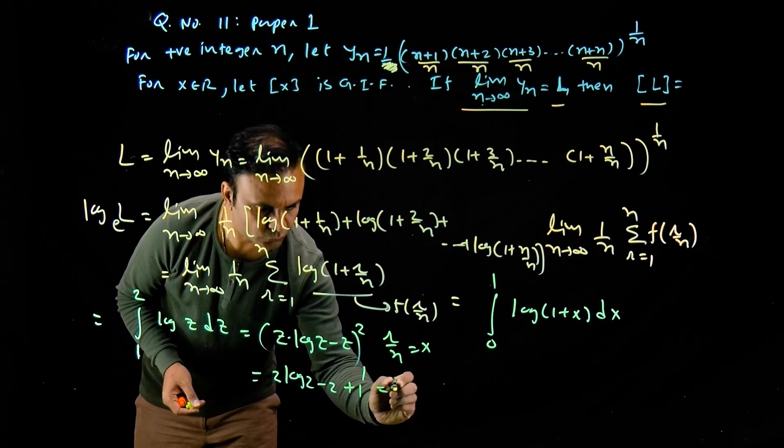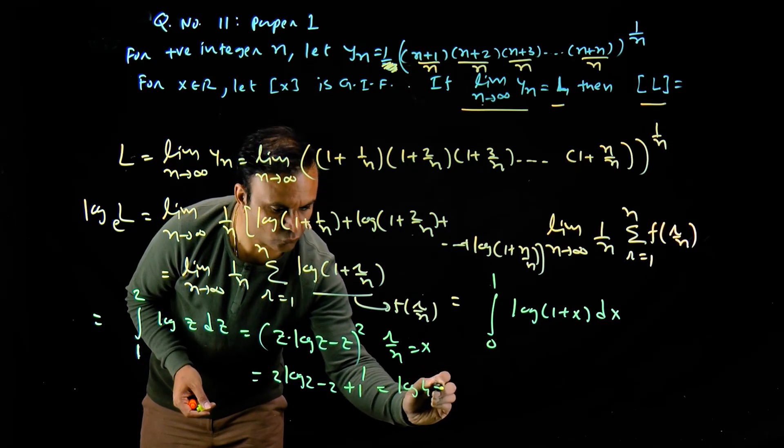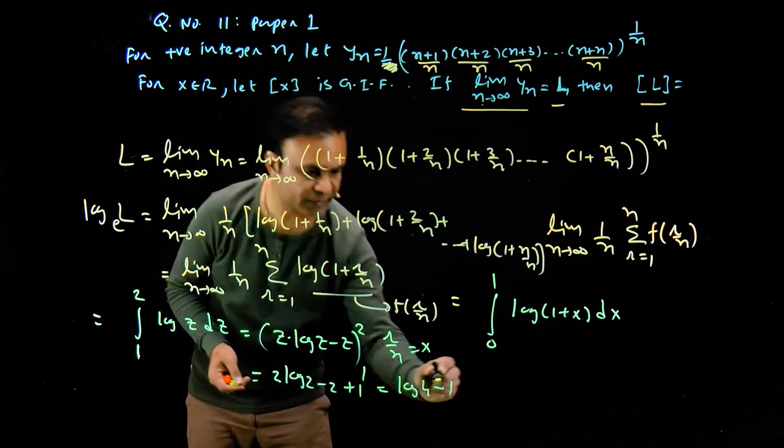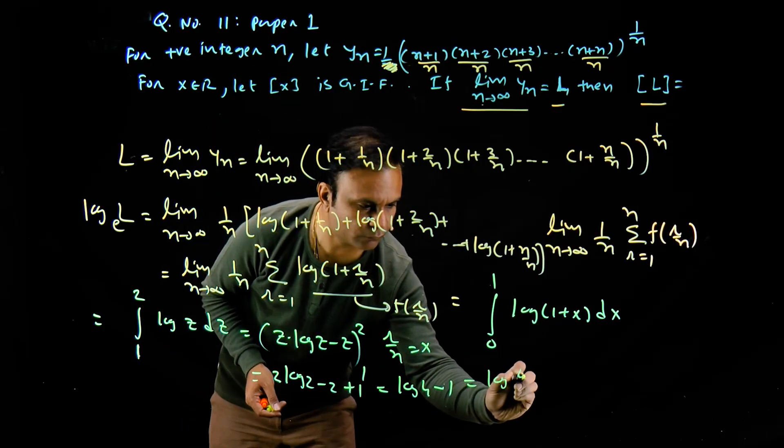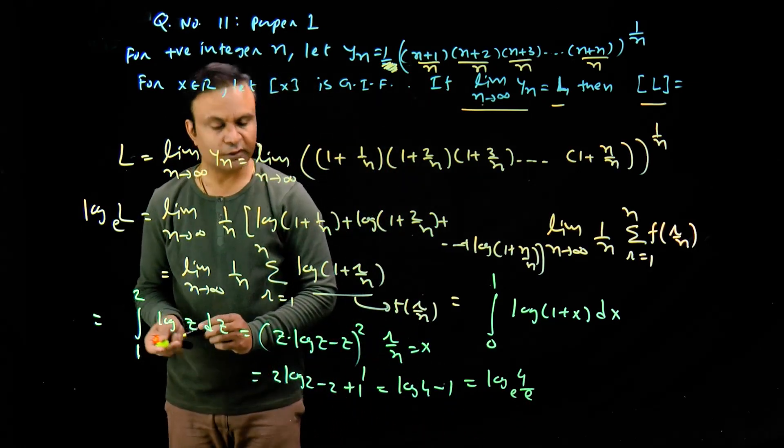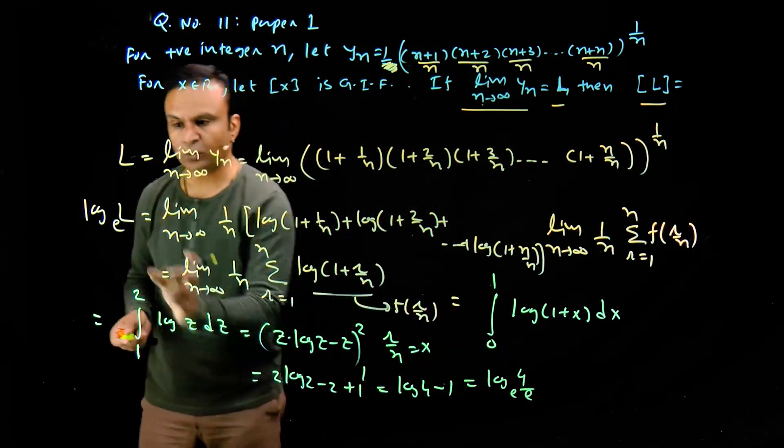So this equals log of 4 minus 1 to the base e. So this is log of (4/e) to the base e. This is actually the value of log l.